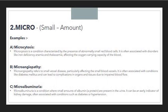Now the next prefix is 'micro,' which is the opposite of macro. Micro means small amount, while macro means large amount. The first example is microcytosis — a condition characterized by the presence of abnormally small red blood cells. This could be an interview question: what is the difference between macrocytosis and microcytosis? From the prefix alone you can answer it. Microcytosis is often associated with disorders like iron deficiency anemia and thalassemia, affecting the oxygen-carrying capacity of the blood.